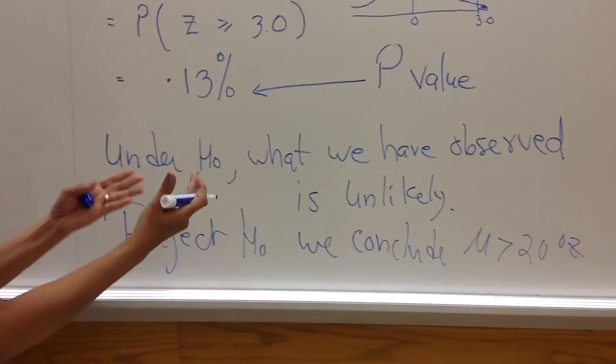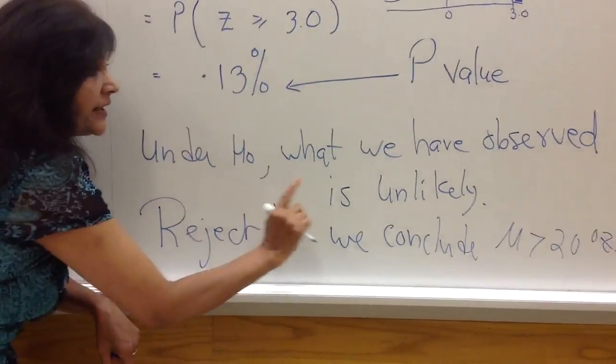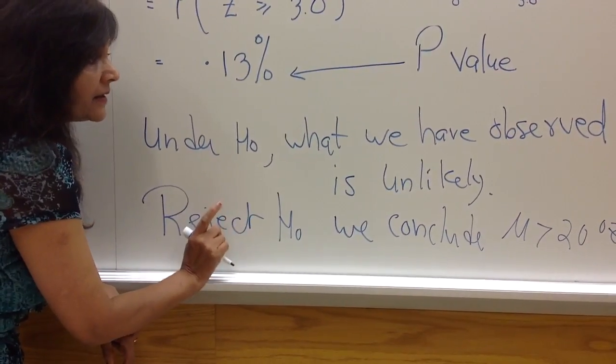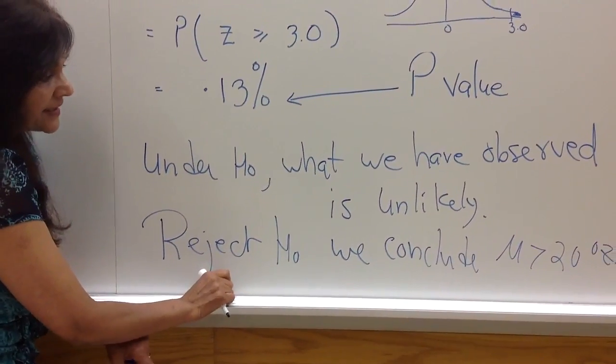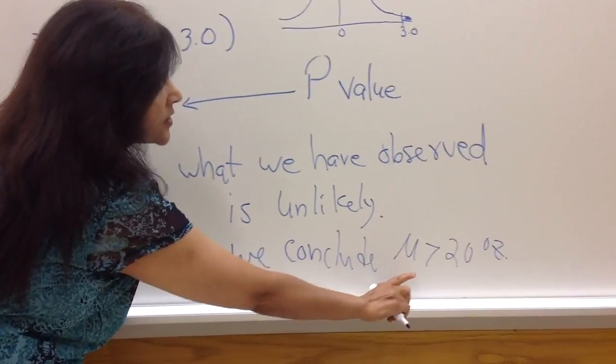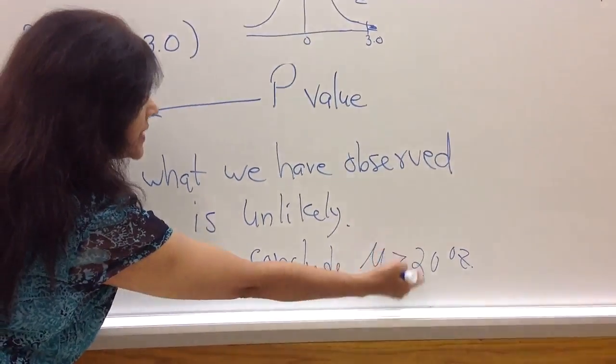But what we have observed, we have observed, so we cannot deny that. So because what we have observed is very unlikely under null hypothesis, we reject null hypothesis and conclude the alternative is true, which is that mu is bigger than 20.